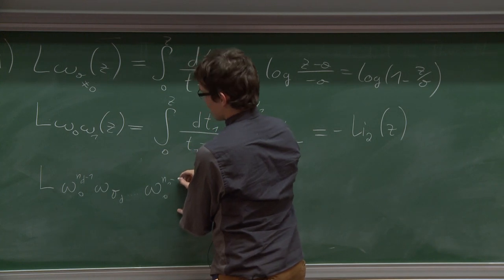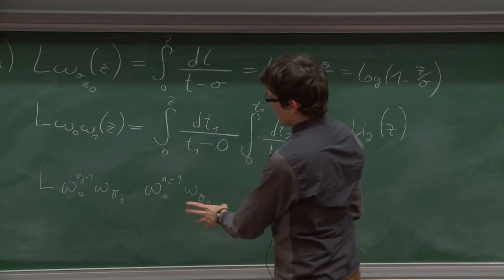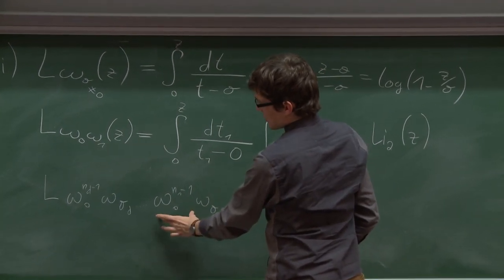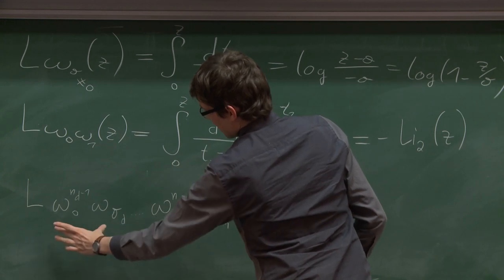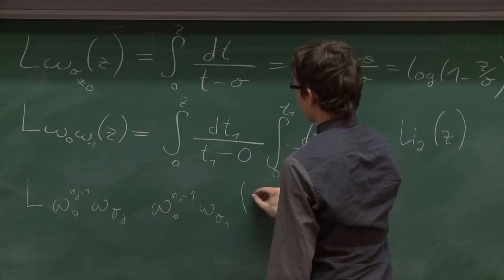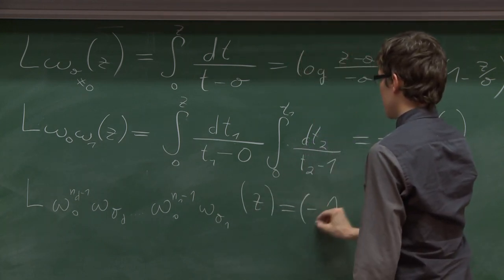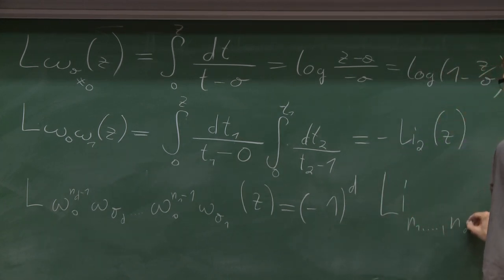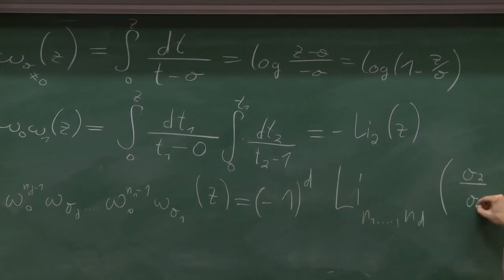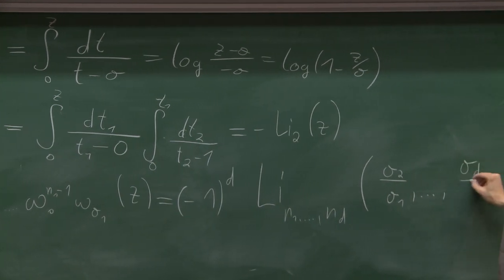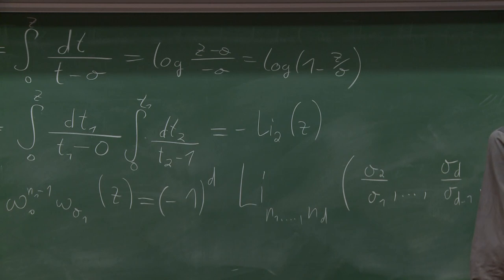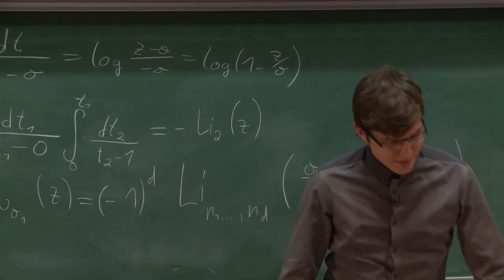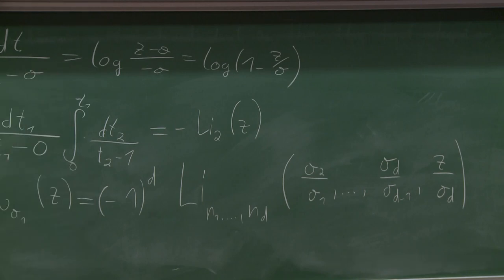More generally, if you have a word ending in a non-zero letter followed by bunches of zeros, this is (−1)^d times the multiple polylogarithm with these indices, evaluated at the ratio of the non-zero letters. So we get all multiple polylogarithms in this particular iterated integral representation.